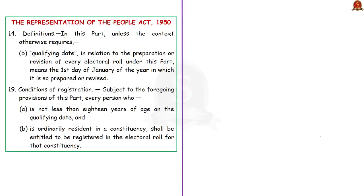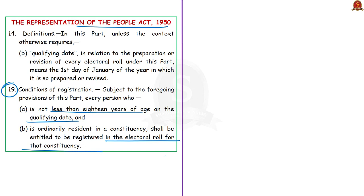First let us see how a general elector is registered in our country. As per Section 19 of the Representation of People Act 1950, every Indian citizen who has attained the age of 18 years on the qualifying date is eligible to be registered as a voter. She will be registered in the electoral roll of the polling area of a particular constituency where she is ordinarily residing. The qualifying date refers to the first day of January of the particular year of revision of the electoral roll.